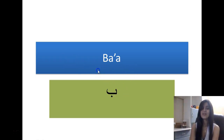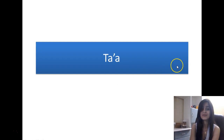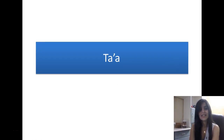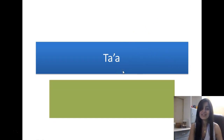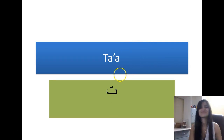Then next we have T. Its pronunciation is just like a T in English. And we write it like this. This is the shape of T in Arabic.